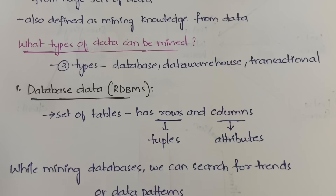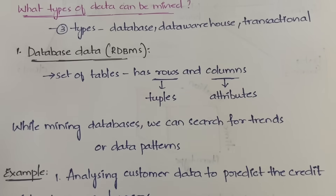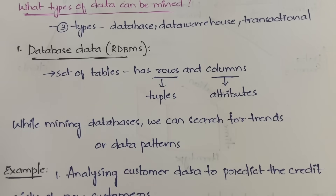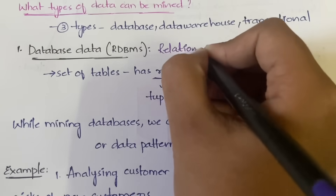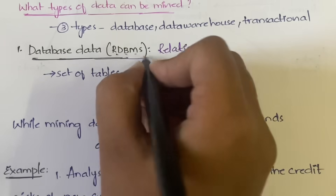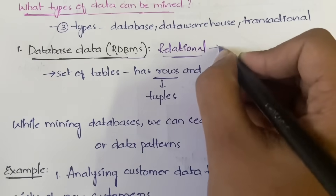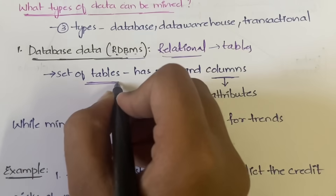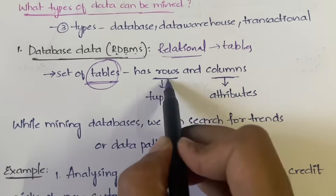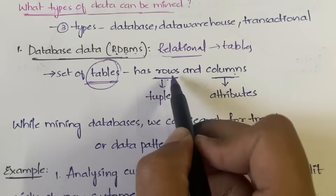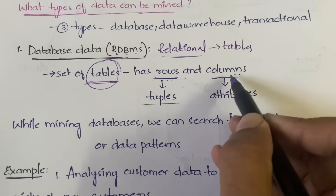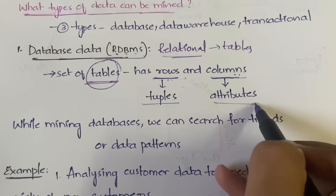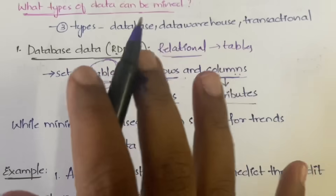First is database data. Database data is nothing but the RDBMS — Relational Database Management System. A relational database management system simply consists of tables. These tables will have rows and columns. A row will represent a tuple and a column will represent an attribute.